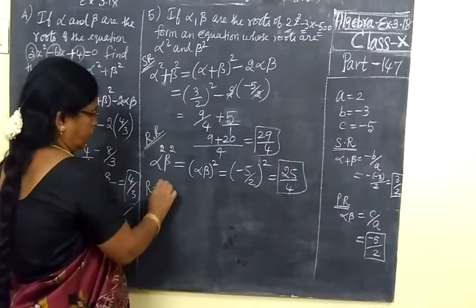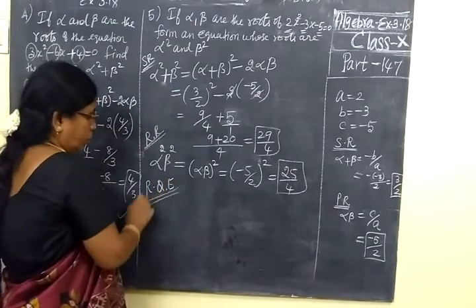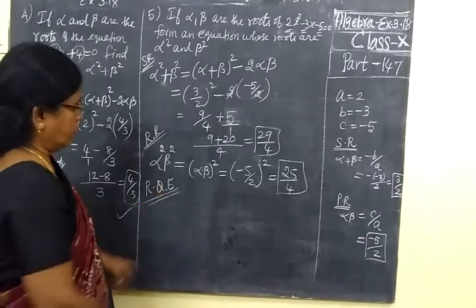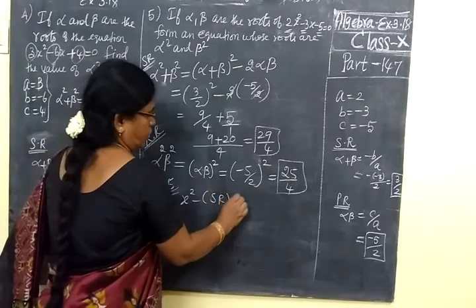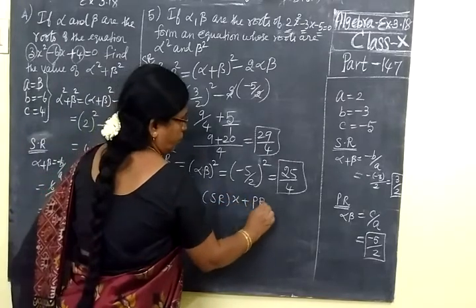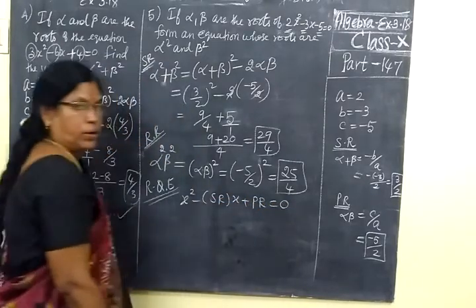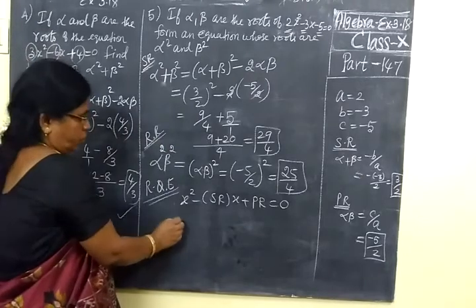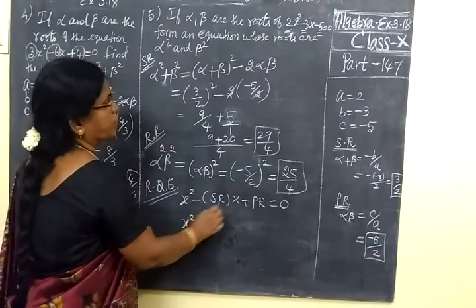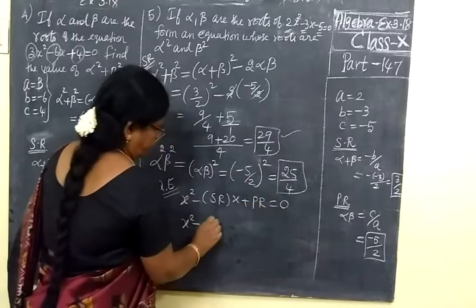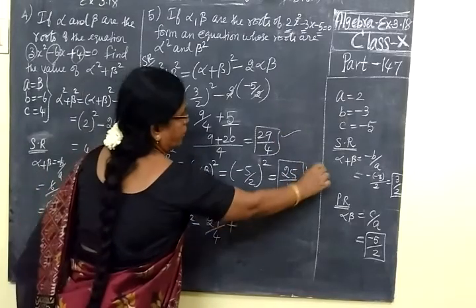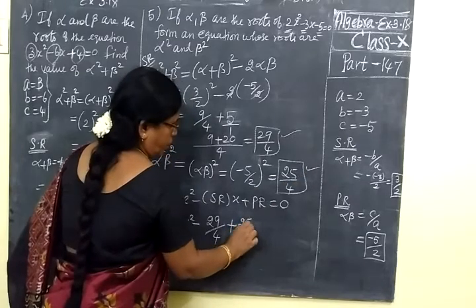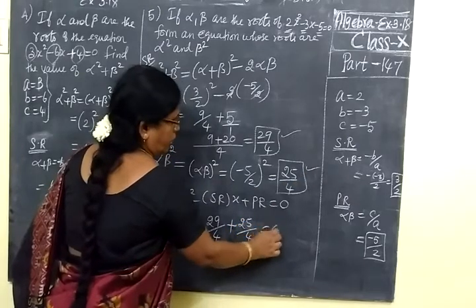Now required quadratic equation. Required quadratic equation is X square minus sum of the root S plus product of the root P equal to 0. So X square minus sum of the root 29 by 4 plus product of the root 25 by 4 equal to 0.